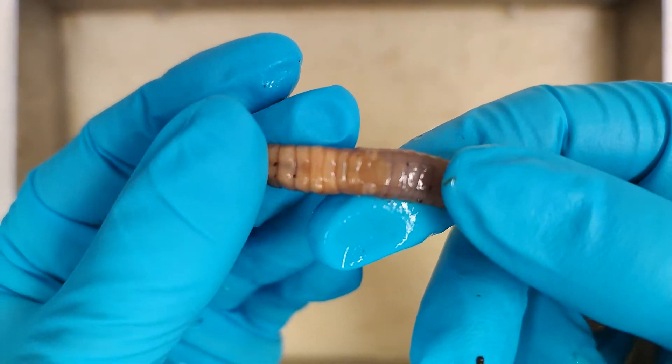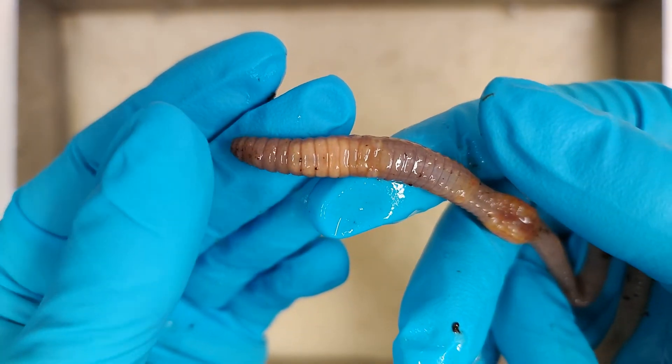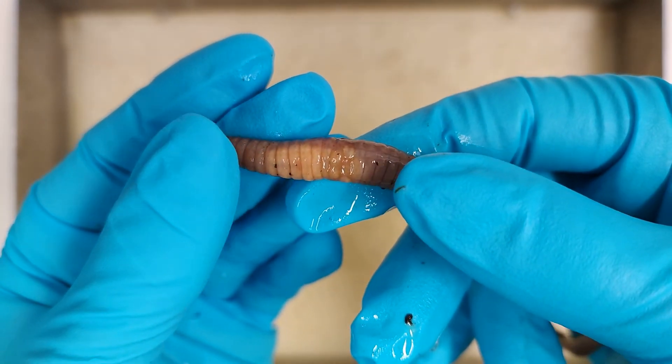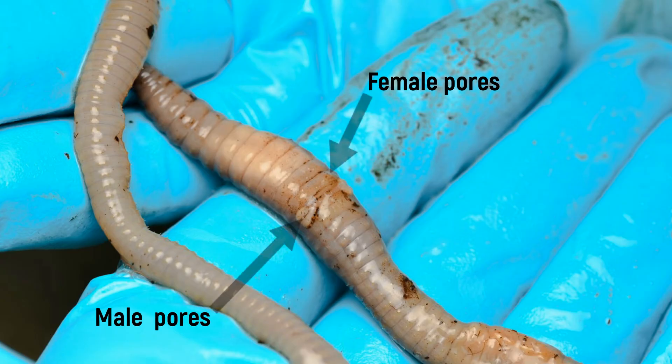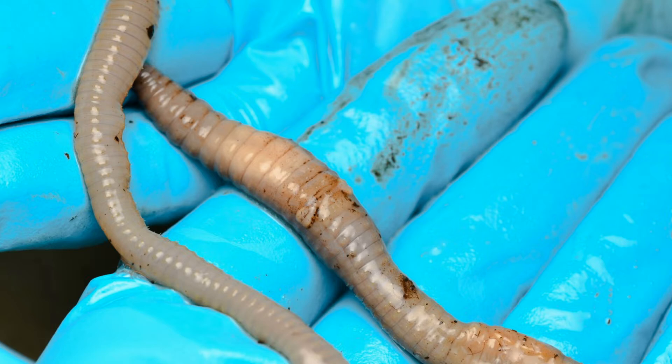Earthworms are simultaneous hermaphrodites. The openings of two pairs of seminal receptacles lie between the ninth and tenth, and between the tenth and eleventh segment. The small, inconspicuous female genital openings, or female pores, are on the fourteenth segment; the pair of larger male pores on the fifteenth segment. In sexually mature animals, the male pores are surrounded by lip-shaped bulges.